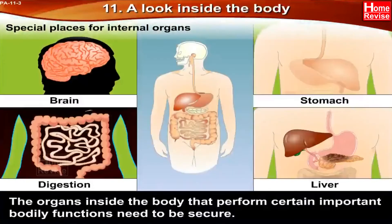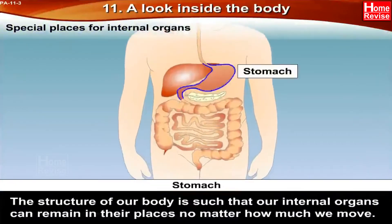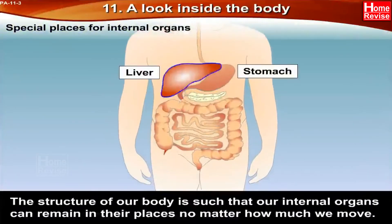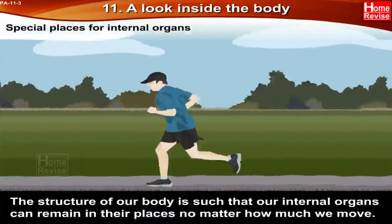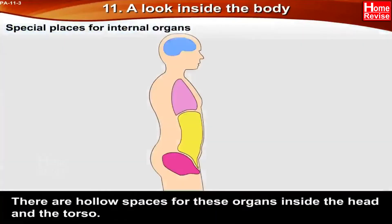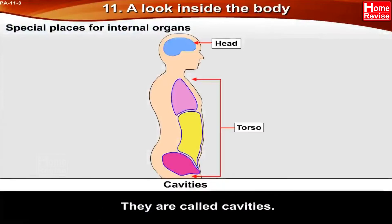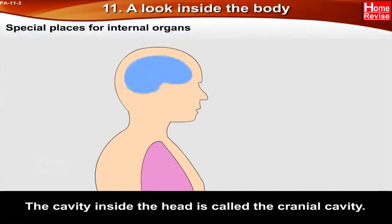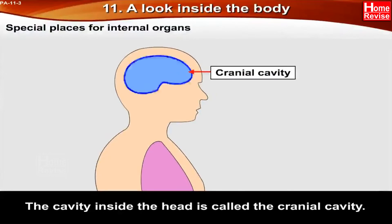The organs inside the body that perform certain important bodily functions need to be secure. The structure of our body is such that our internal organs can remain in their places no matter how much we move. There are hollow spaces for these organs inside the head and the torso, called cavities. The cavity inside the head is called the cranial cavity.